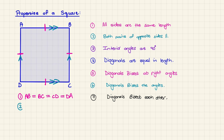We can write it mathematically as AB is parallel to CD, and BC is parallel to AD.